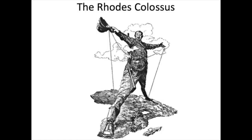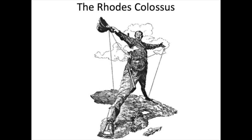Here again is Cecil Rhodes standing on Africa. This popular cartoon is a visual reminder of the 19th century symbiosis of imperialism and industrialization. Industrialization made 19th century imperialism possible, and imperialism nourished industrialization's continued growth.